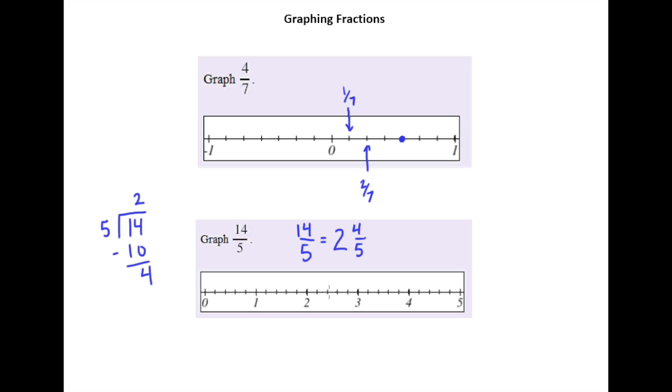So we can already see there's one, two, three, four, five tick marks from two to three. And so that means it's already divided into five equal parts for us.